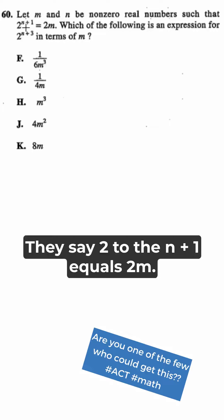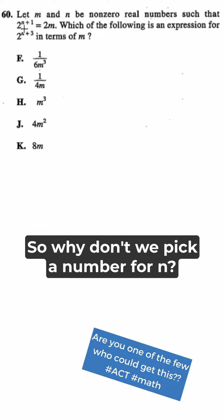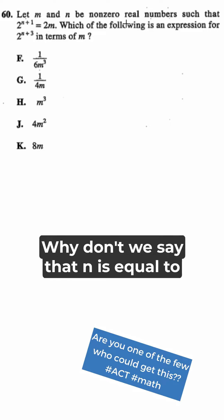This is another number 60. They say 2 to the n plus 1 equals 2 times m. So why don't we pick a number for n? Why don't we say that n is equal to 2.